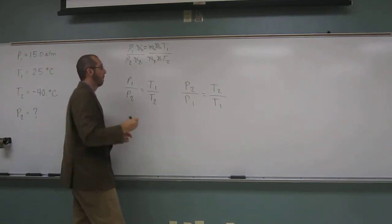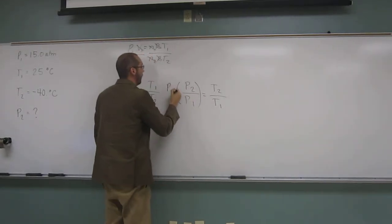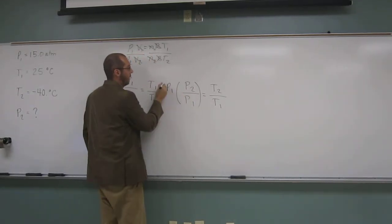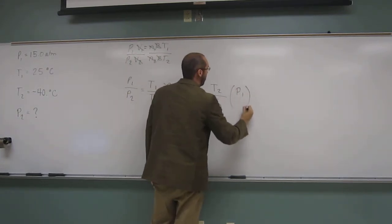So remember, we're trying to isolate P2. So what do we need to do next? Multiply by P1. So if we multiply by P1, what happens here? Cancel. And multiply here by P1.